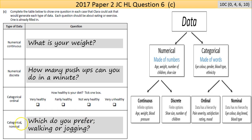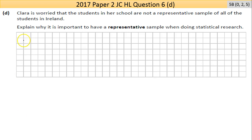For categorical ordinal, you need a hierarchy — something like a scale from very healthy to very unhealthy. For categorical nominal, you're describing an activity or giving an opinion — for example, 'Do you prefer walking or jogging?' or 'Do you prefer bread or pasta?' — that's about eating. It's a tricky question but if you know this material you can make a fair attempt. You're looking at low partial for one correct, high partial for two, and full marks for all three.